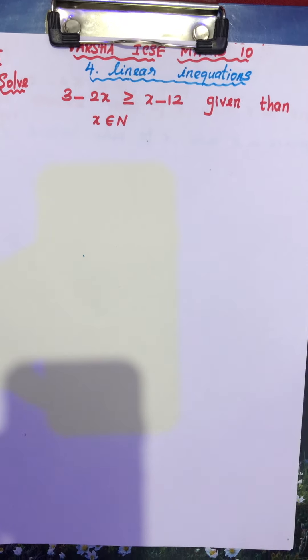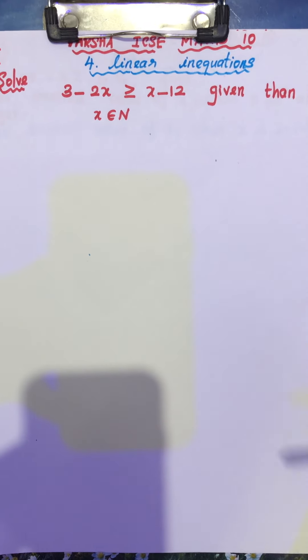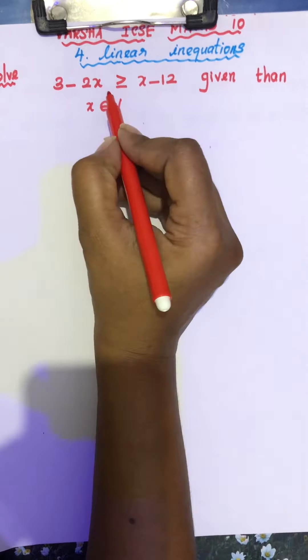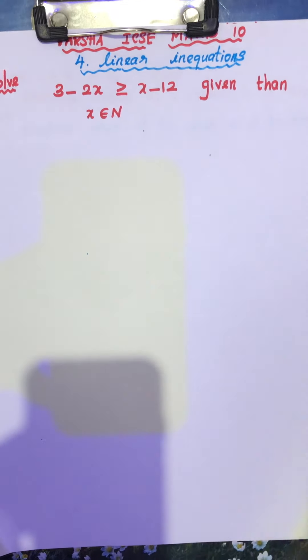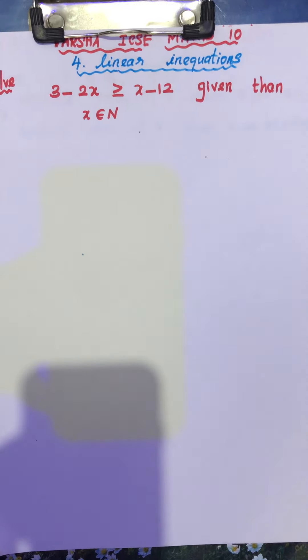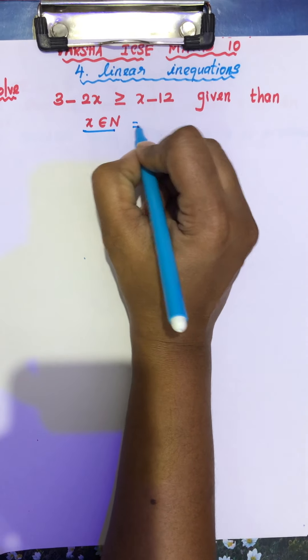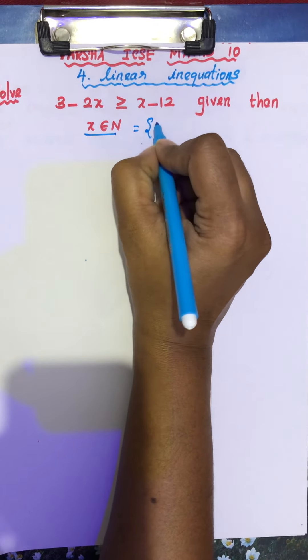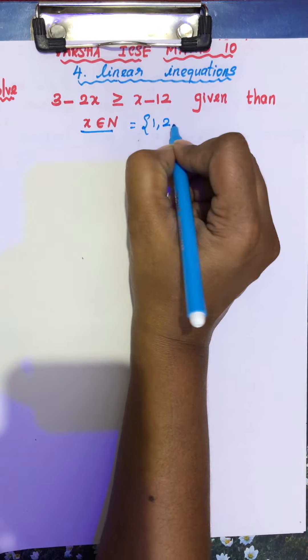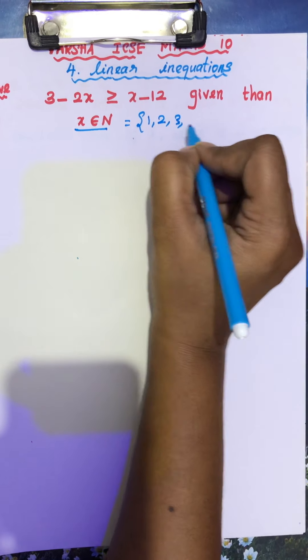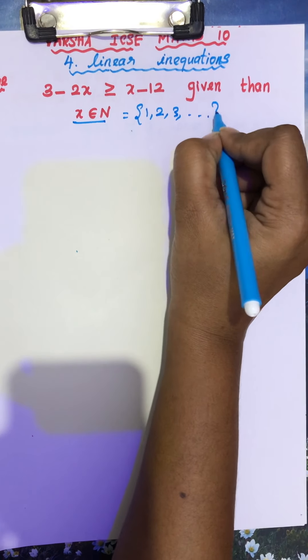Before that, you have to know all the rules. If you know the rules well, you can do the sum easily. In this question, x belongs to natural numbers. Natural numbers contain 1, 2, 3, etc.